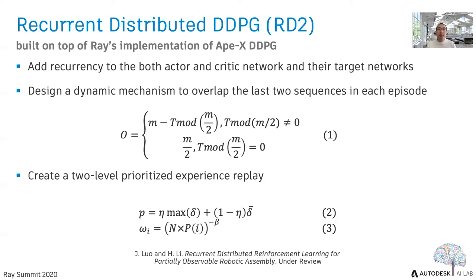We also create a two-level prioritized experience replay: we use absolute n-step TD errors as priorities for transitions, and formula 2 to calculate priorities for sequences, where delta is a list of TD errors in one sequence. For each transition in the sequence, we correct the bias using importance sampling weights as shown in formula 3, applied to each transition with normalized weights. Priorities exist for both transitions and sequences, used for different purposes, and these two methods largely improve training stability.